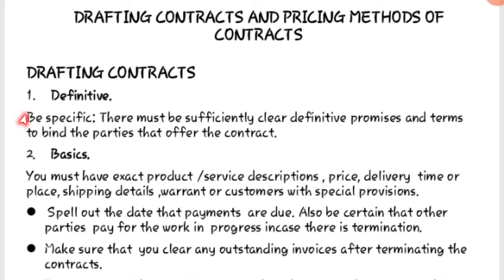While drafting your contract, the first principle is to be definitive — meaning be specific. There must be sufficiently clear, definitive promises and terms to bind the parties that form the contract. You should use language someone can understand, and the clauses included should be clear and well written.